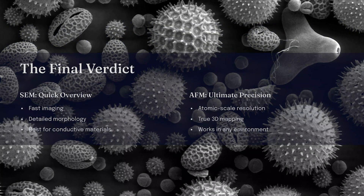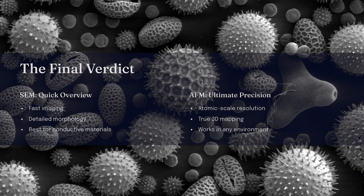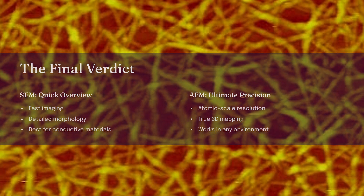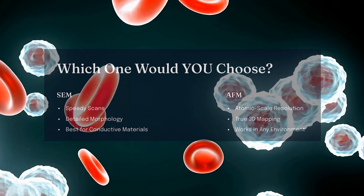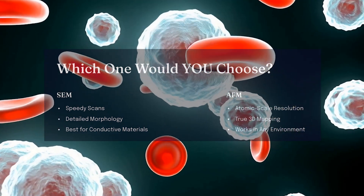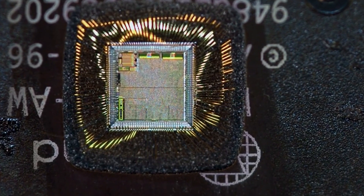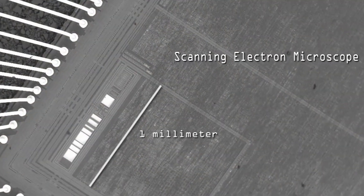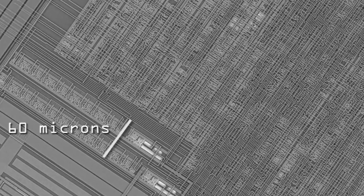Let's summarize. For high-speed imaging and detailed surface morphology, SEM is the better option. For atomic-scale resolution, true 3D mapping, and biological samples, AFM is unbeatable. If you could only pick one, which would you choose? Comment SEM or AFM below and let's see which technique dominates the nanoscale world. Both SEM and AFM are powerful microscopy techniques, each with unique advantages. Your choice depends on your research needs, your sample type, and the type of information you need.